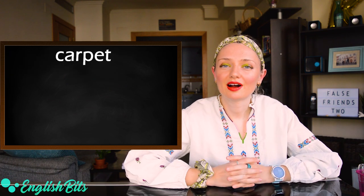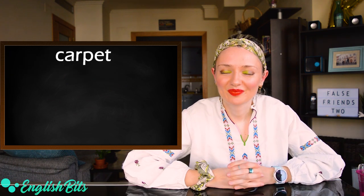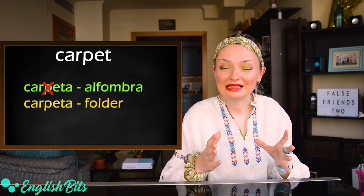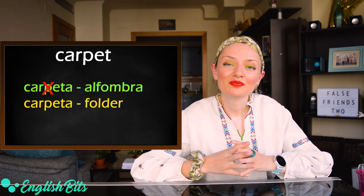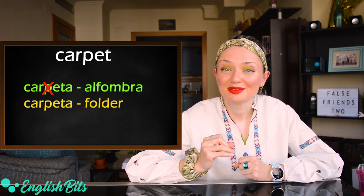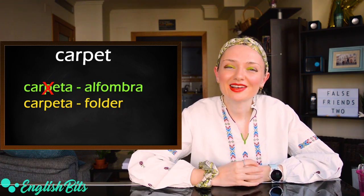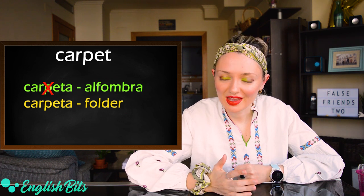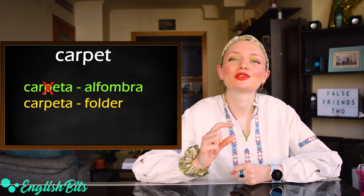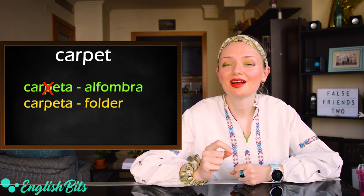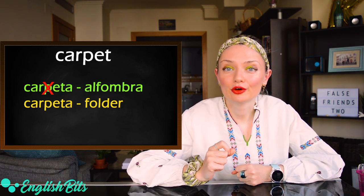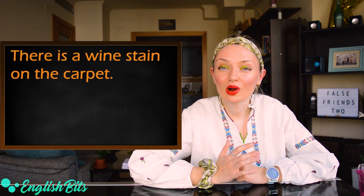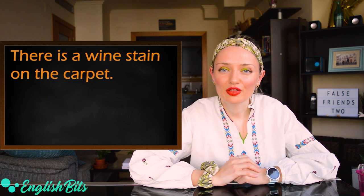Number four: 'carpet'. In English, it doesn't mean 'carpeta' but a kind of rug, but bigger, that covers floors — alfombra. And if you want to say 'carpeta', it's 'folder'. For example: there is a wine stain on the carpet.